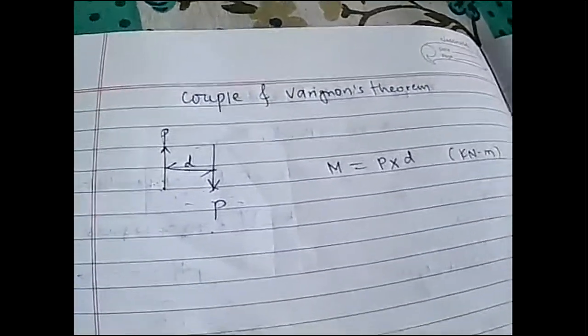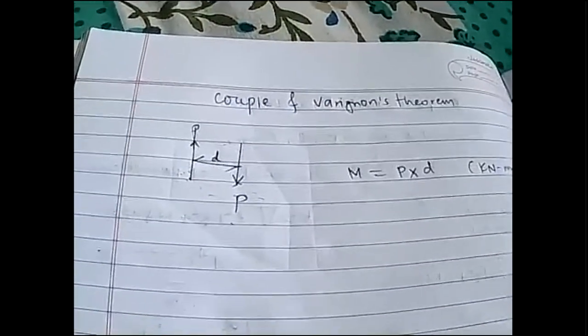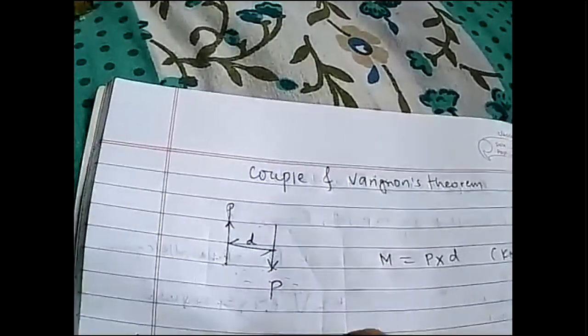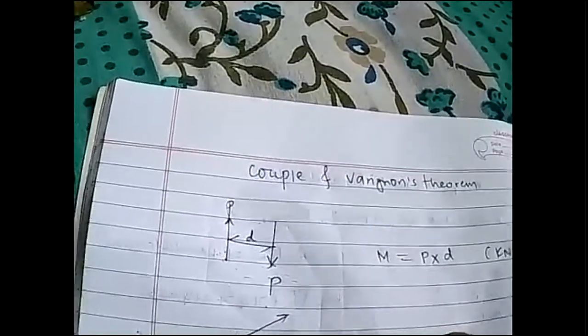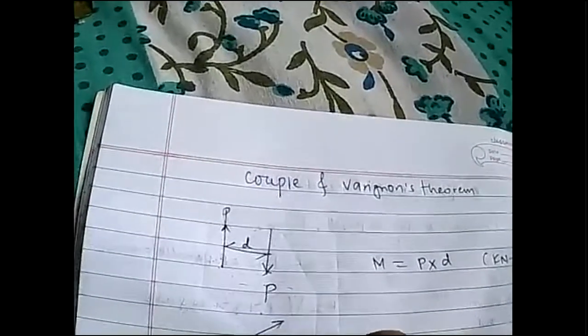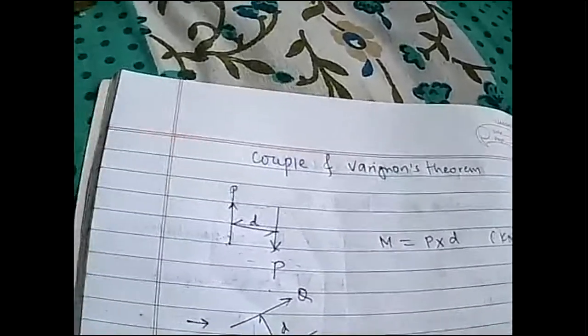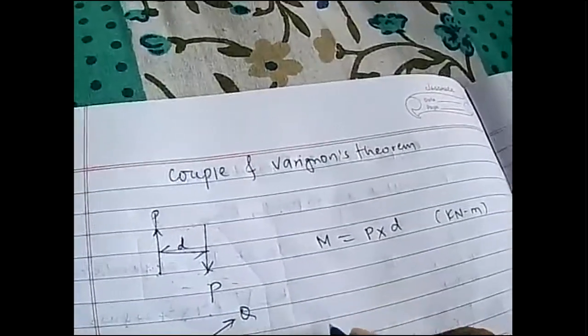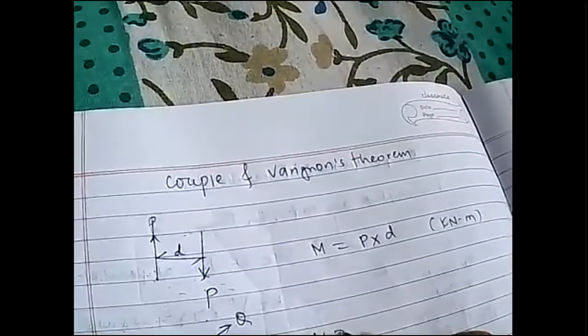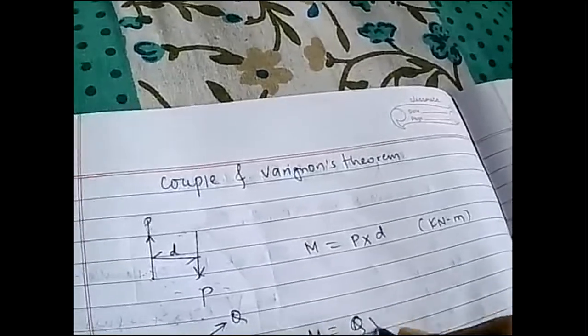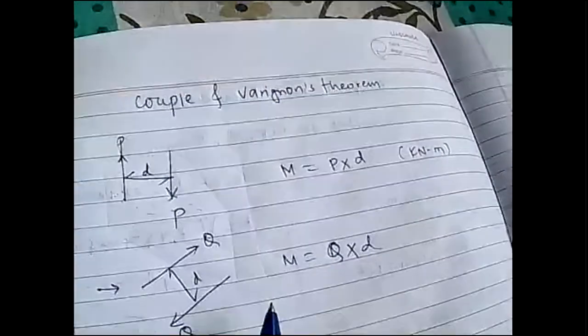I'll tell you two properties of a couple. First of all, the forces should be parallel to each other. It does not mean they should be vertical — they may be inclined — but they should be parallel to each other. Say this is a force q and the distance between them is d, so I'll write the moment as q into d. We know how to take a moment: force into perpendicular distance.